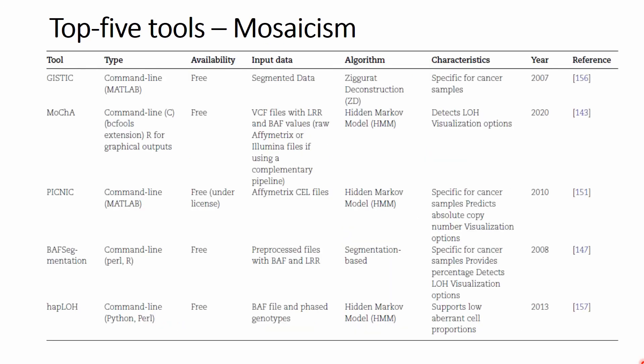Last but not least, there is a list for the top five tools to study mosaicism on the genome. You can find more information including nice figures explaining mosaicism in the paper itself. The tools are GISTIC, MOHA, PICNIC, BAF Segmentation, and HUP LOH — command line tools with various input data possibilities and algorithms, again gravitating towards hidden Markov models.